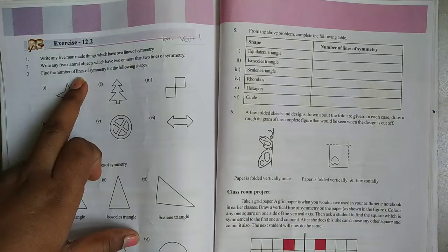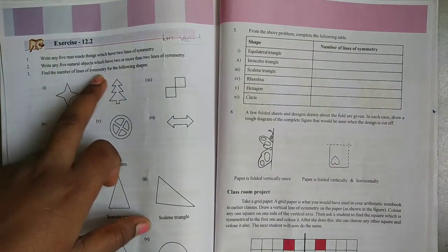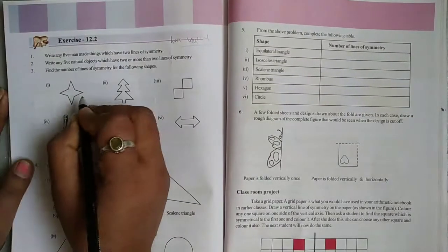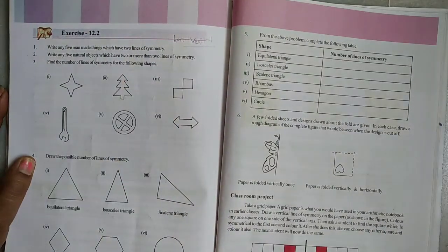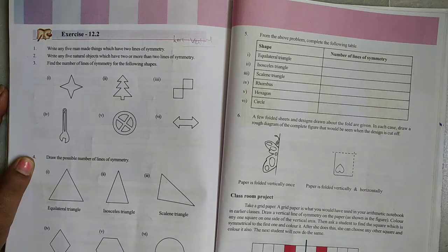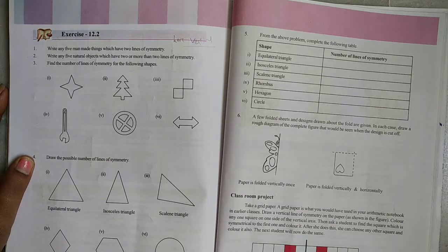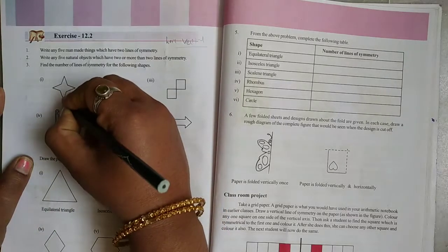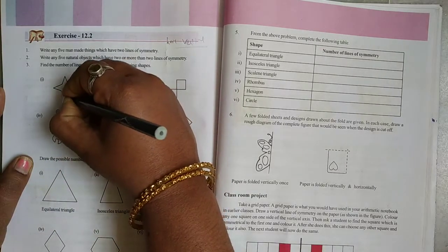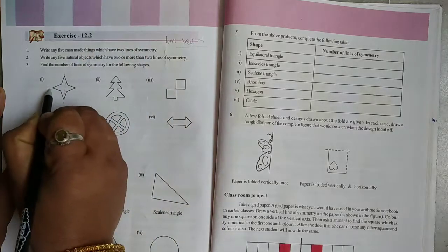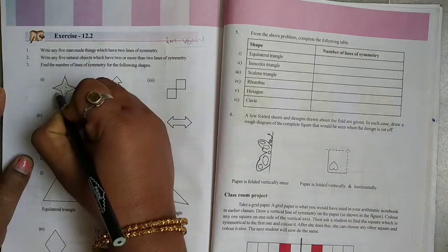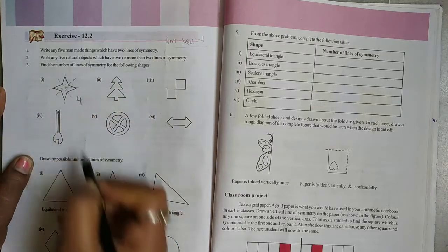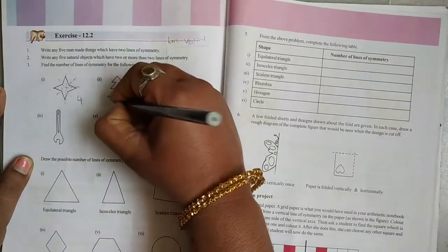Next, find the number of lines of symmetry for the following shapes. Here, we will find out the number of line symmetry for each shape. Here I will show you: 1, 2, 3, 4. It has 4 line symmetry.